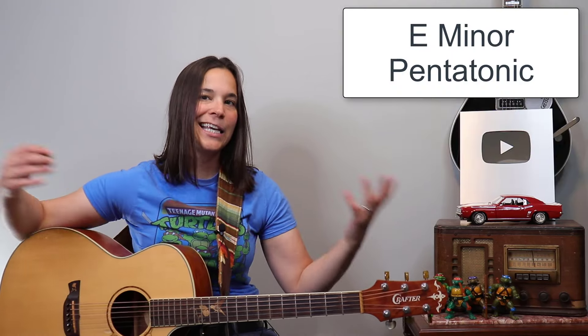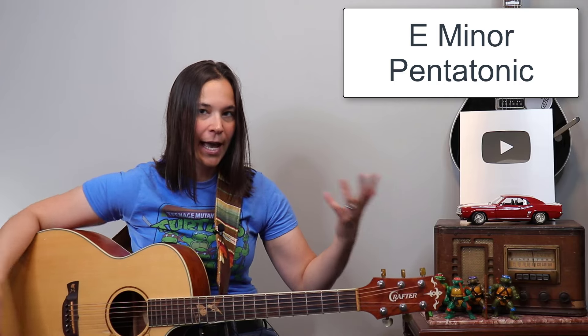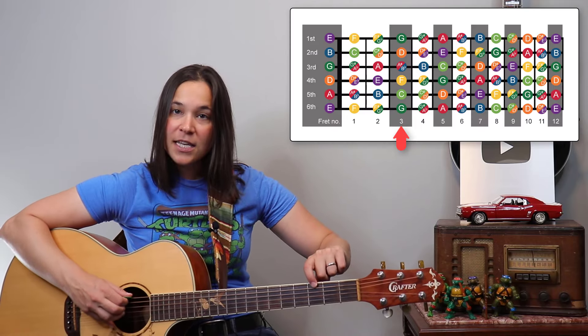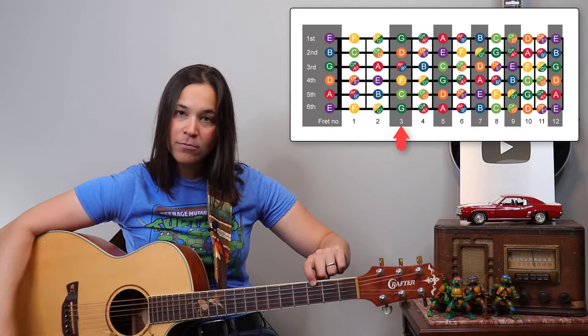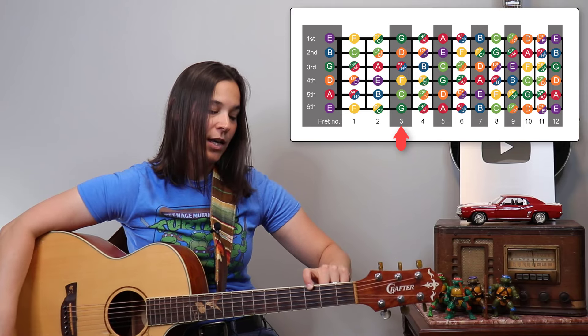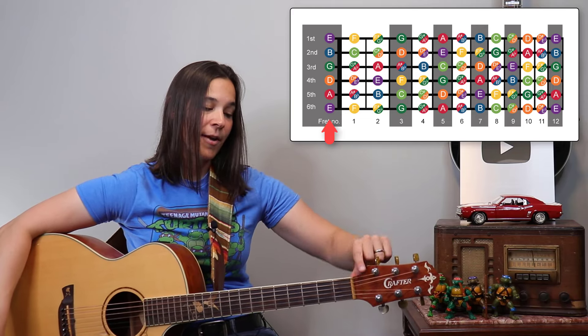And your scale will be perfectly positioned to play over that song. So take a song like Sweet Home Alabama — that one's in G, which means it would be an E minor pentatonic. How do I know that?